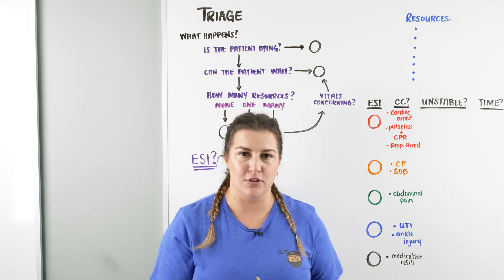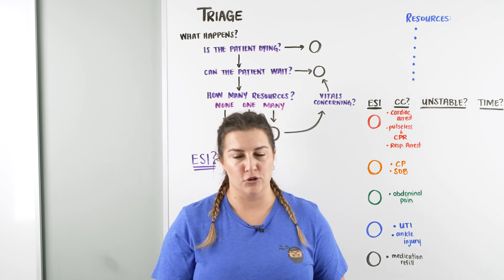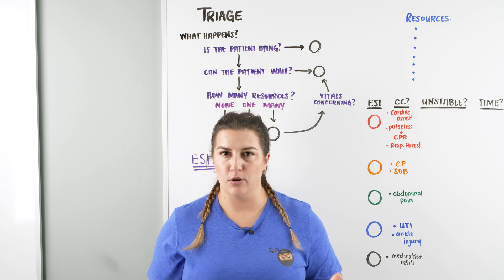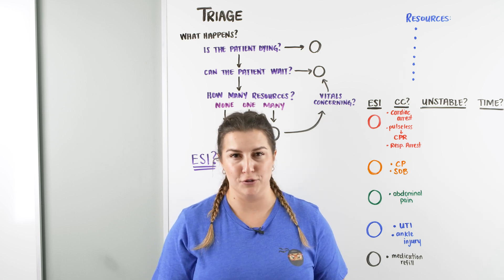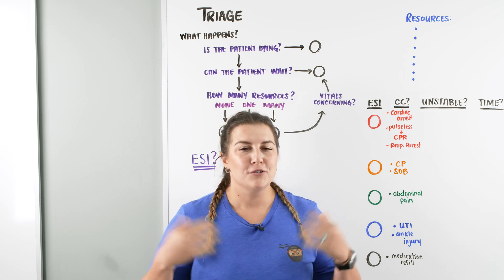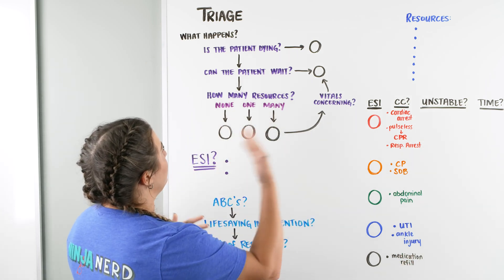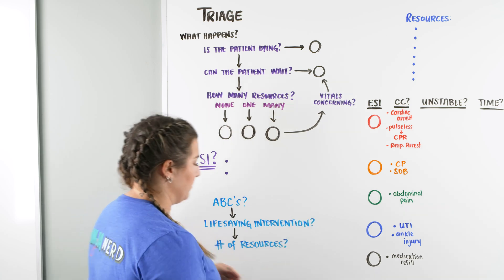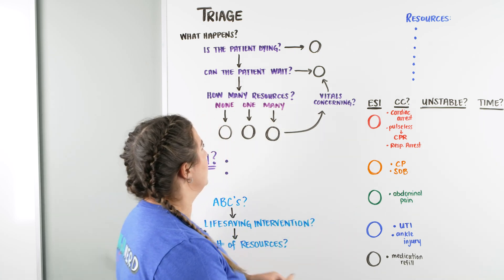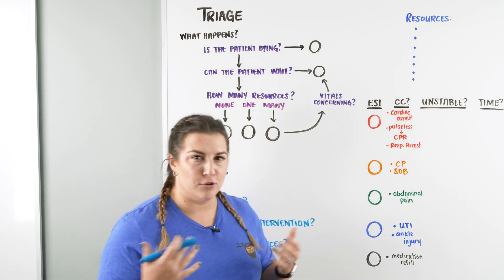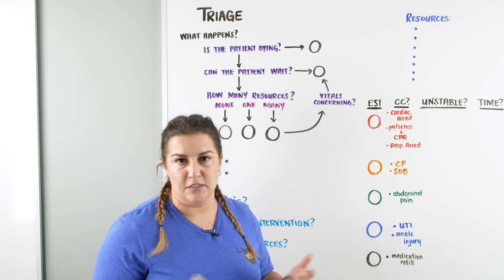What happens when a patient comes into the emergency room, and how does that triage nurse go through and decide what's going to be going on with that patient, and what kind of resources are going to be using for that patient. So for triage, the word actually means to sort. And what we're going to be looking at here is what happens when they come through the door. So when the patient comes in, the first big question, as an emergency room nurse, you're going to look at them and say, is this patient dying?